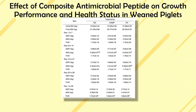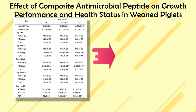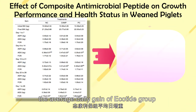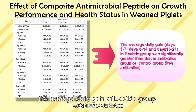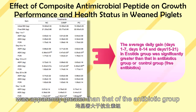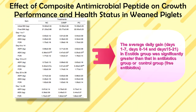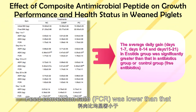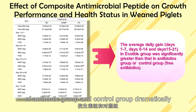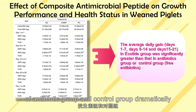In conclusion, the results showed that the average daily gain of the Equotide group was apparently greater than that of the antibiotic group or control group. Feed conversion ratio was also dramatically lower than that of the antibiotic group and control group.